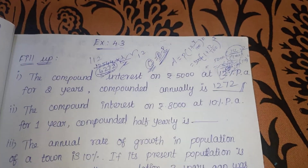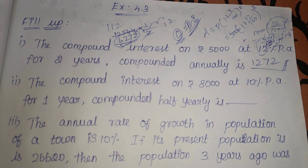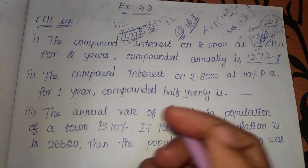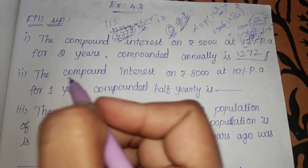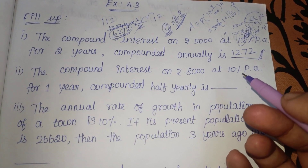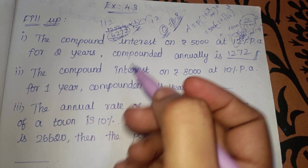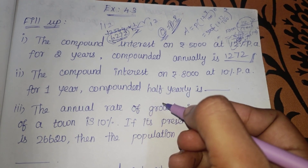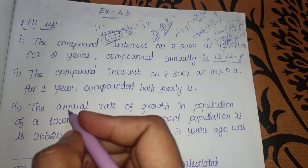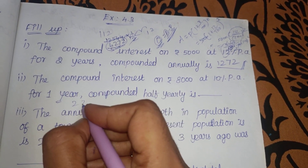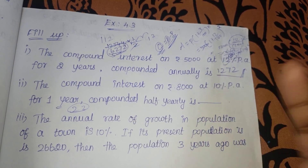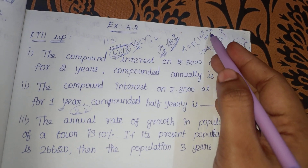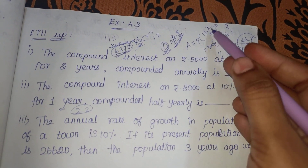Please comment on the practice problem: compound interest on Rs. 8,000 at 10% per annum for 1 year, compounded half-yearly. So this is 1 year, which is 2 halves, so we get it 2 times. So 2N is the power, divided by 200.